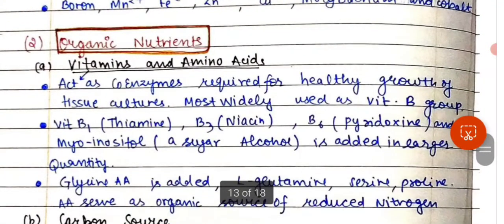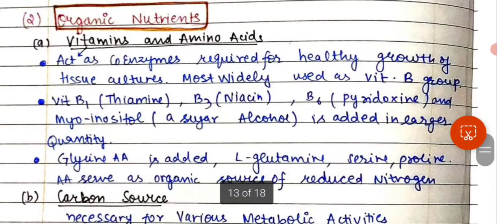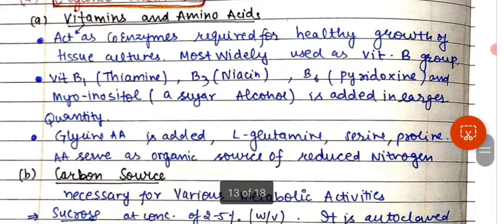Organic nutrients include vitamins and amino acids. Vitamins act as coenzymes required for healthy growth of tissue cultures. The most widely used are the vitamin B group: vitamin B1 (thiamine), B3, B6, and myo-inositol, which is added in larger quantities compared to other vitamins. Amino acids added include glycine, glutamine, serine, and proline.